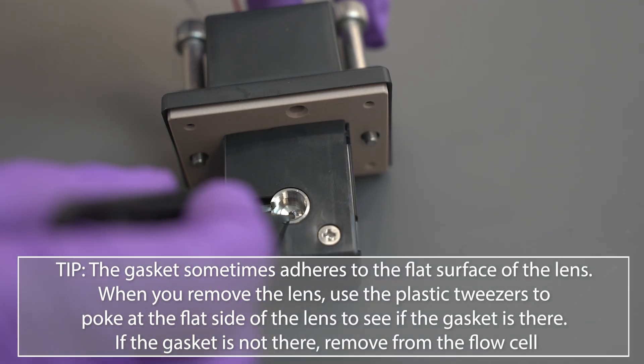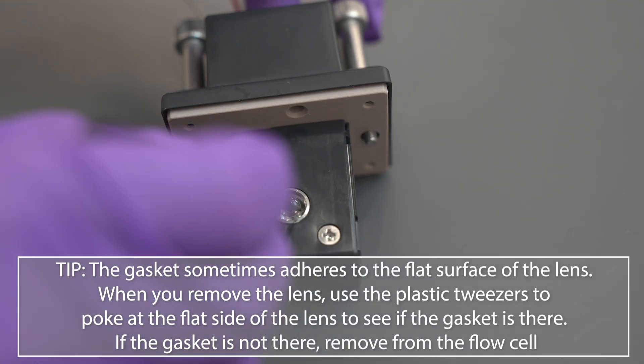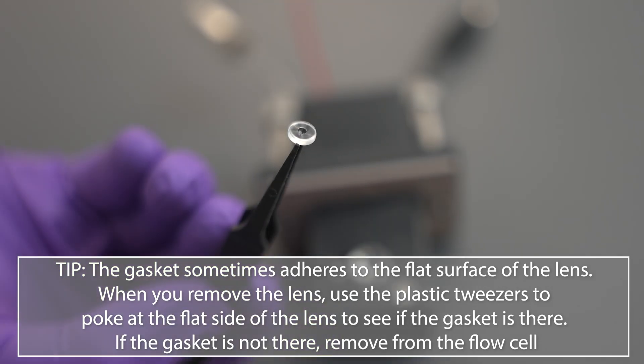The gasket sometimes adheres to the flat surface of the lens. When you remove the lens, use the plastic tweezers to poke at the flat side of the lens to see if the gasket is there. If the gasket is not there, remove it from the flow cell.